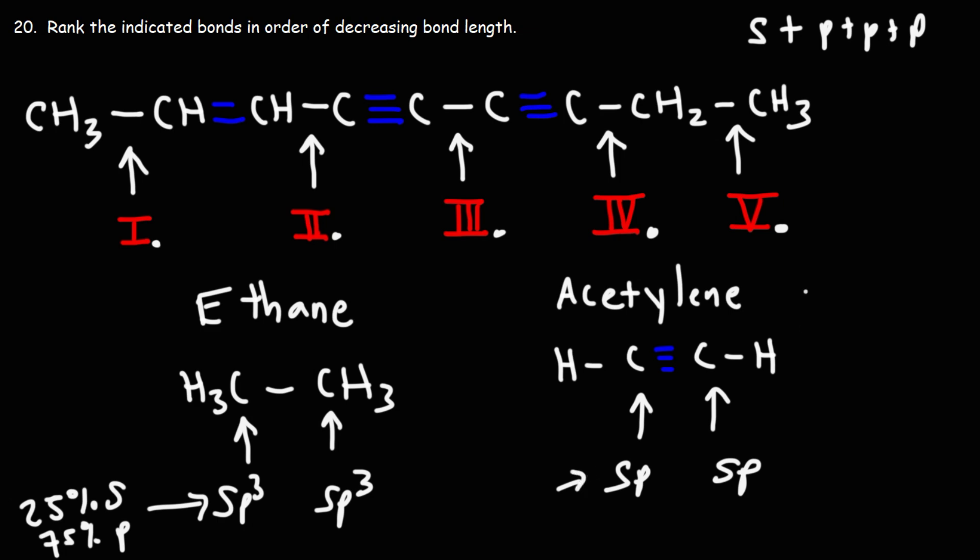Now, an sp hybrid orbital, it's a hybrid of 1s, 1p. So one out of two orbitals, it's 50% s and 50% p.